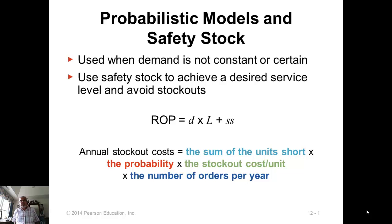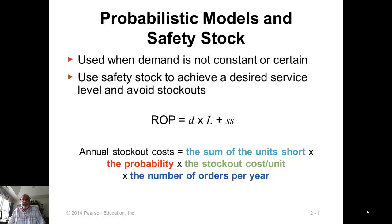We have discussed three EOQ models for how much to order. Now we're going to look at some ROP models, or reorder point models. If the demand is constant and lead time is constant, then your ROP is simply D times L, and that's it. But when the demand is not constant,